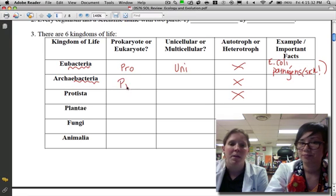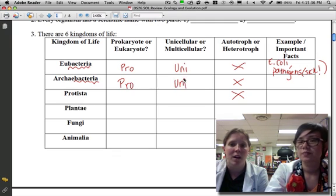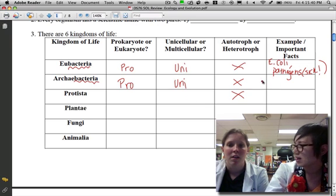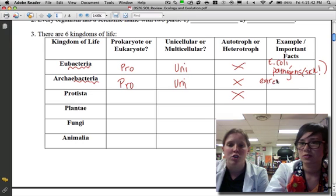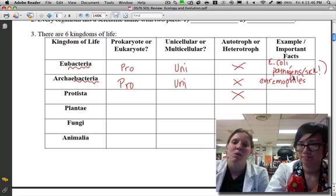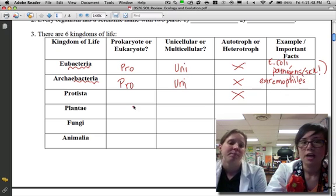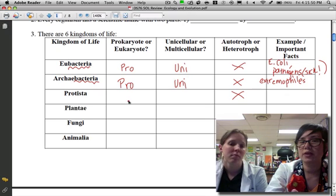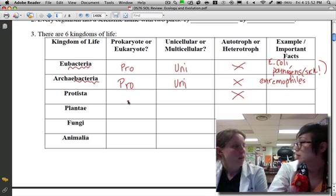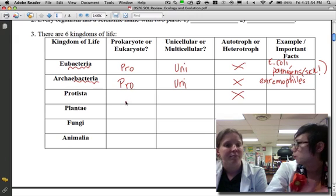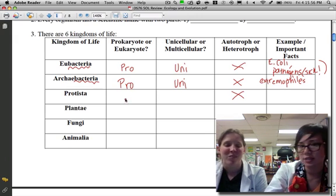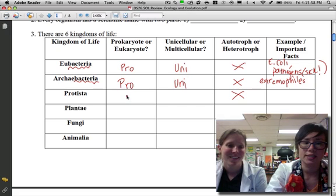Archaebacteria. It's got to be a prokaryote, no nucleus, has to be small, unicellular. An example: we just call these guys extremophiles because they like to live in extreme environments like hot springs or the Dead Sea, which is really salty. The difference between these two kingdoms is that eubacteria are all around us, we come in contact with them all the time. We're never going to come in contact with archaebacteria unless we're very specific types of scientists.